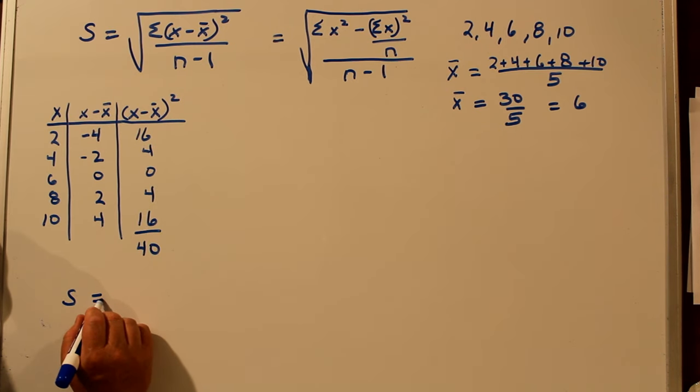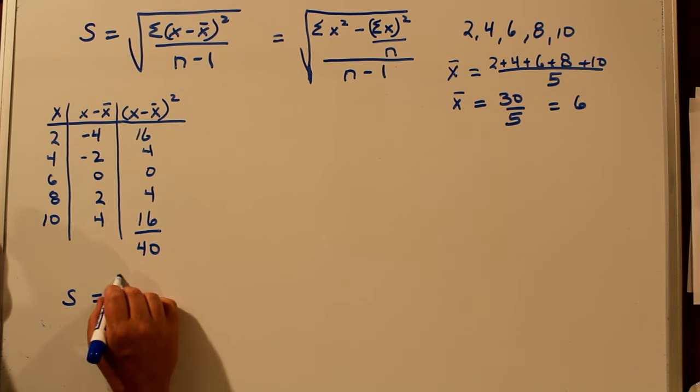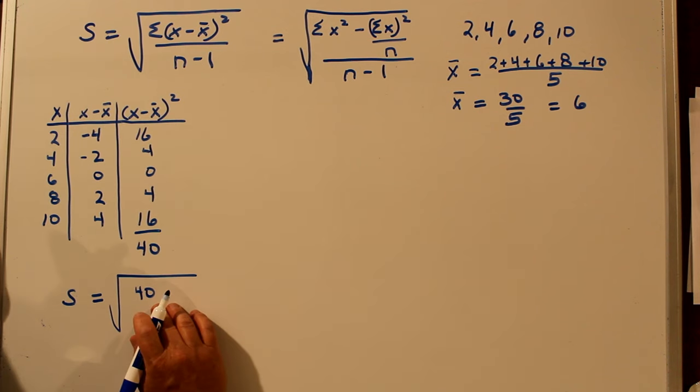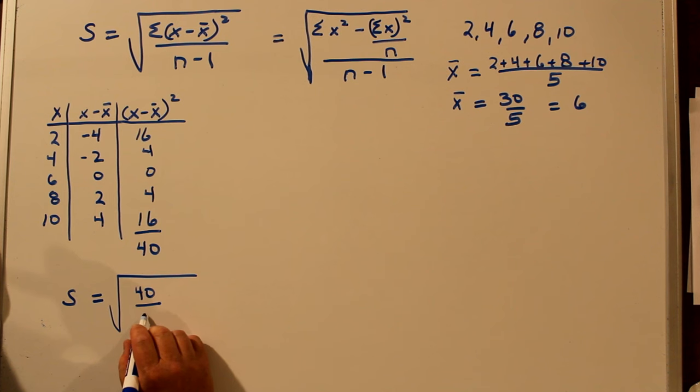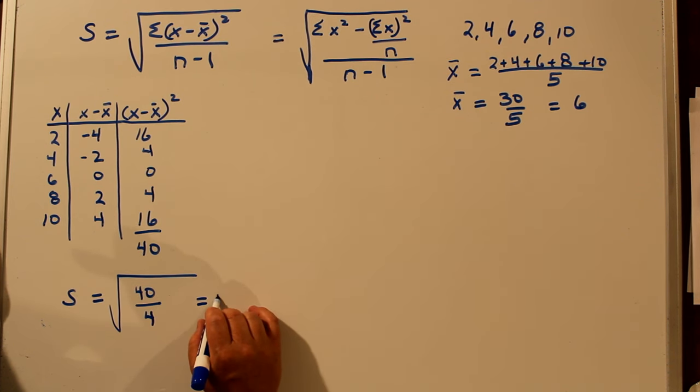The standard deviation, S, equals square root of the summation of the squares, 40, divided by n minus 1. Well, there's five numbers in our group. So n minus 1 is 4. So the standard deviation is the square root of 10.